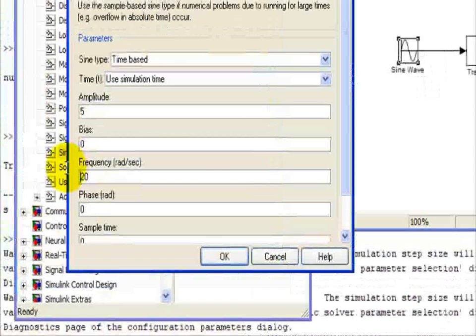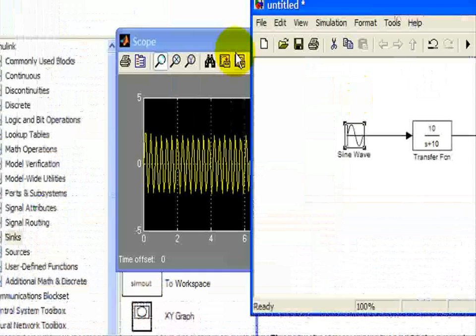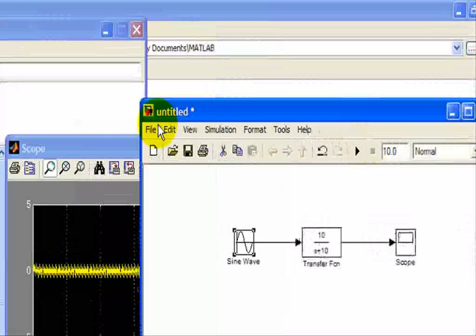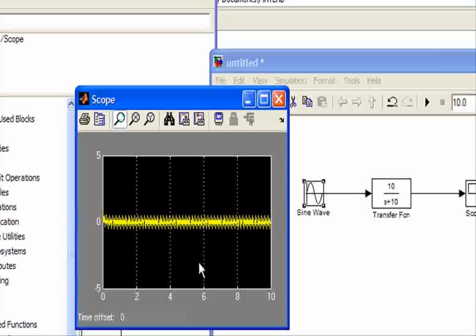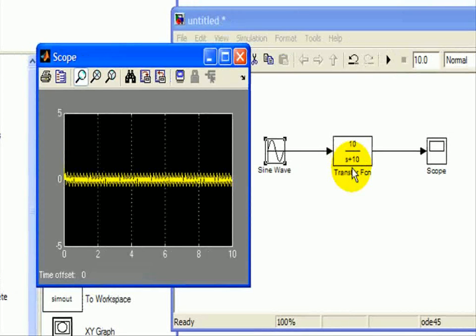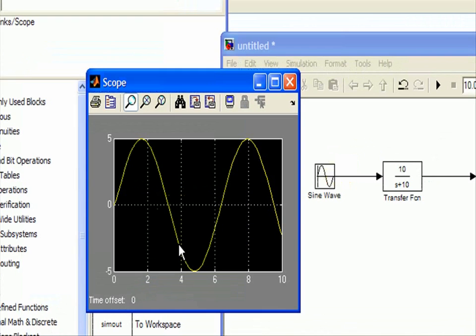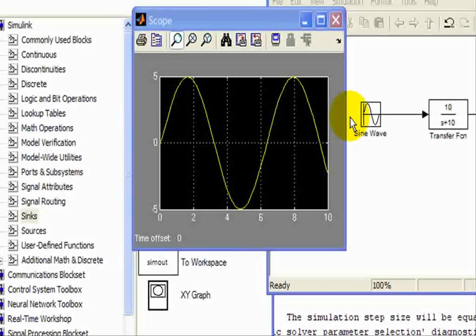We'll change it to 100 radians per second as the input frequency, and we should see our output decreases even more. Hopefully, this demonstrates that this transfer function, as we saw with the RC circuit, does exhibit the effects of a low-pass filter where it passes frequencies below 10 radians per second and rejects frequencies above 10 radians per second. That concludes this demonstration using Simulink. The next video will do a demonstration on MATLAB.